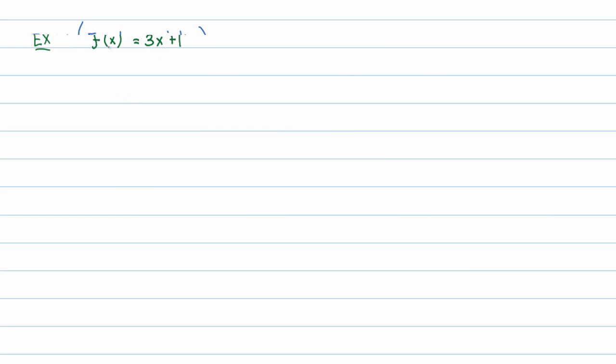We'll start with an extremely simple example. f of x is equal to 3x plus 1. What this is saying is that x is the input, that's our input variable, f of x is our output. Now, remember, f of x is just a fancy way of writing the letter y.